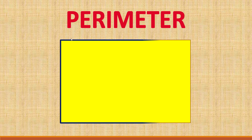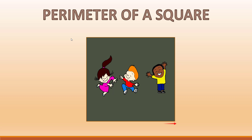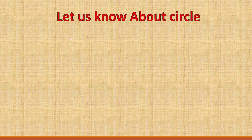Perimeter: the perimeter of the rectangle is the sum of its four sides. The perimeter of a square is the sum of its four sides — look at the yellow color line. This is the perimeter of a square. Now let us know about the circle.